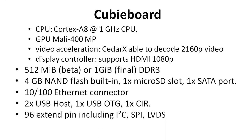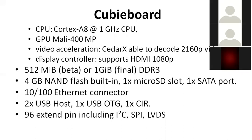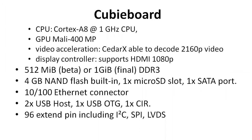The Cubieboard CPU runs at 1 GHz and the GPU is a Mali-400 MP. It supports HDMI 1080p display output. Memory is 512 MB or 1 GB DDR RAM, with 4 GB NAND flash built-in and a micro SD slot. It also has a 1× SATA port, 10/100 Ethernet, 2×USB ports, 1× USB OTG, 1× IR, and 96 extended pins including I2C, SPI, and LVDS.